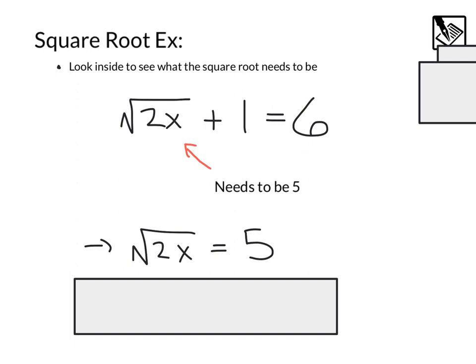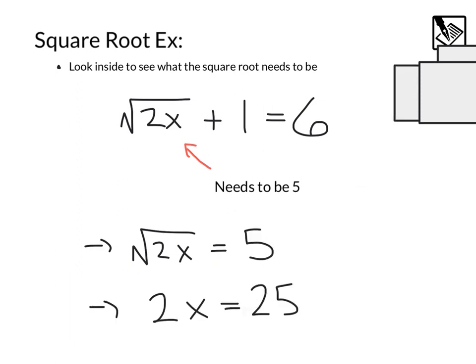That would kind of be the same like if we subtracted 1 from both sides. From there, we want to look inside again. Well, I know this whole thing needs to be 5. And what square root, square root of what is going to give me 5. So in that case, I can say, I know what's inside here. This 2x, that's going to have to equal 25. Because if that equals 25, then the whole problem is going to work out. Because square root of 25 is 5. And that's what we're looking for.